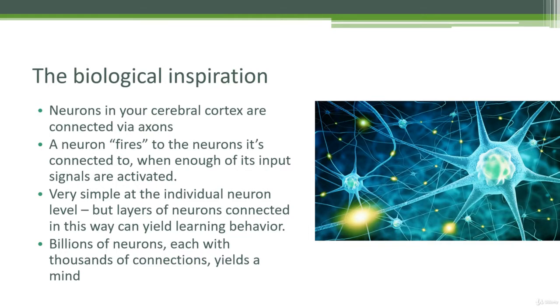So within your brain, specifically your cerebral cortex, which is where all of your thinking happens, you have a bunch of neurons. These are individual nerve cells, and they are connected to each other via axons and dendrites. You can think of these as connections, wires if you will, that connect different neurons together.